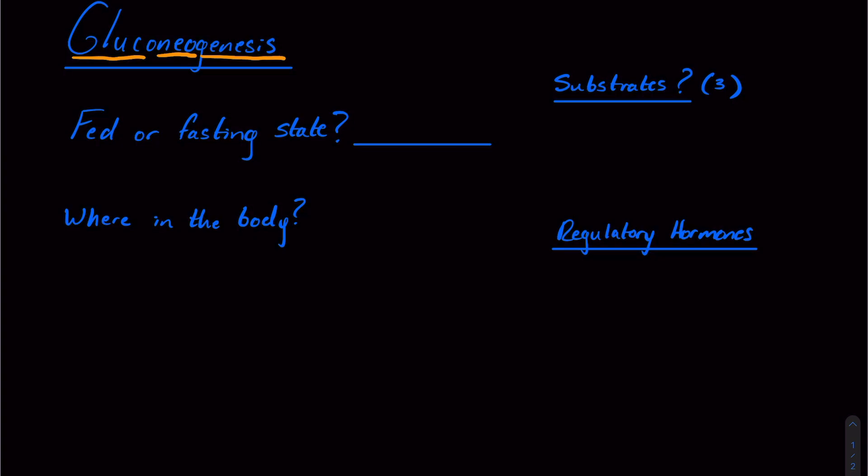And we have to ask ourselves, and this is probably the most high-yield thing for the MCAT, is conceptually they want you to understand, is this occurring in the fed or fasting state? And you should ask yourself, in what conditions would we want to increase our blood sugar or increase the amount of glucose that we have in our blood? And that's, of course, going to be in the fasting state.